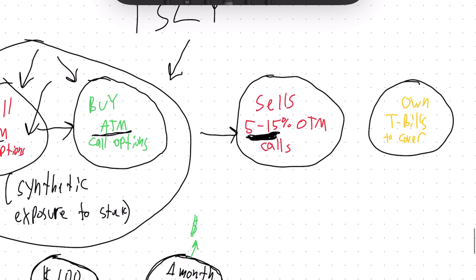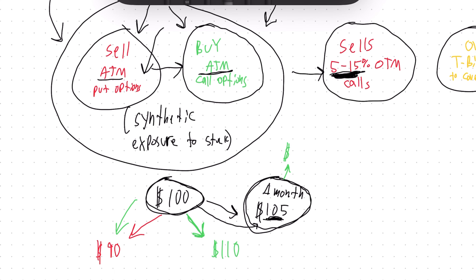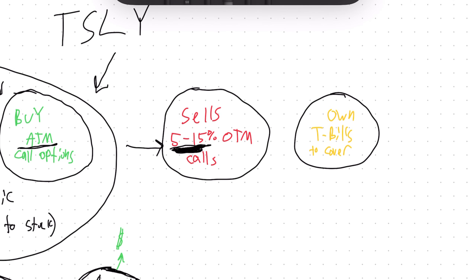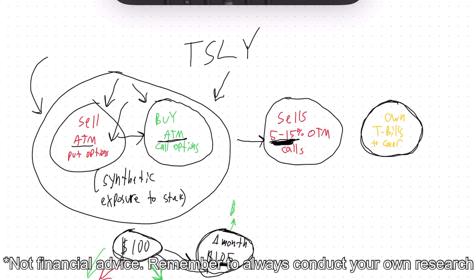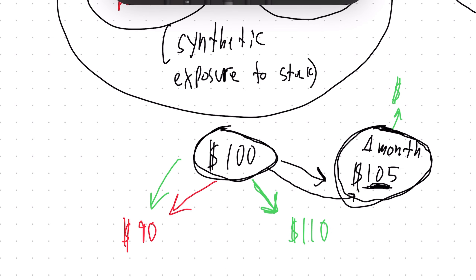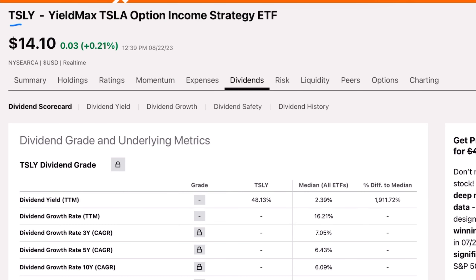That is how these funds operate. You have synthetic exposure to 100% of the price movements of the underlying stock in both directions. Because the call options are sold 5 to 15% out of the money, we participate in gains up until that point, giving us capped price appreciation. We generate income by selling that call option, and because we hold T-bills to cover these call options, that money generates some interest. The big risk is that even though you have capped exposure to the upside synthetically, you have unlimited synthetic exposure to the downside. Also worth noting: the US treasuries this fund invests in are six months to two years in maturity - if interest rates continue to go up, the value of existing bonds will decrease.